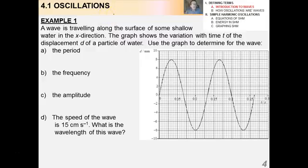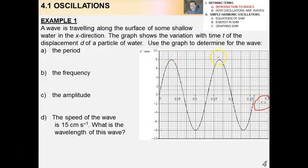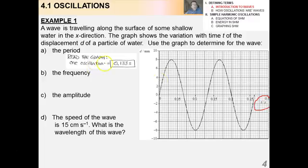Let's try an example — a past paper question. We have a wave traveling along the surface of shallow water in the x-direction, and we're given a displacement-time graph. The first thing you should do is notice what kind of graph you have. This is a displacement-time graph, which means the measurement between successive peaks horizontally gives the period, not the wavelength. From the graph, the period is about 0.133 seconds — notice carefully what each division on the x-axis represents.